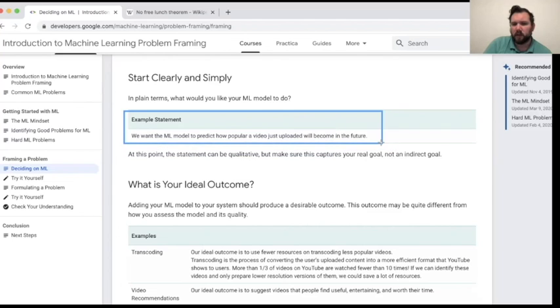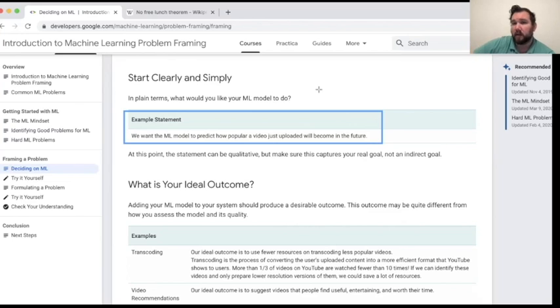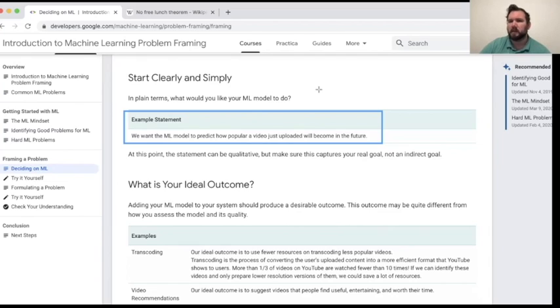So in the example in the course, they say we want the model to predict how popular a video just uploaded will become in the future. Now this isn't a precise statement. They haven't said a metric that we could actually measure and get a number. That comes later, where we take what we're looking at in a qualitative sense and turn it into a metric where we can actually measure.